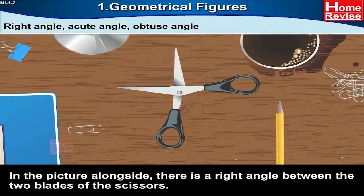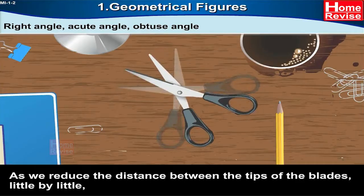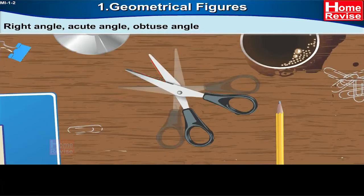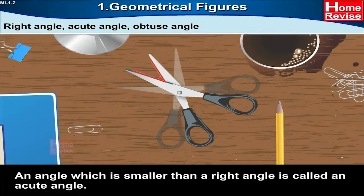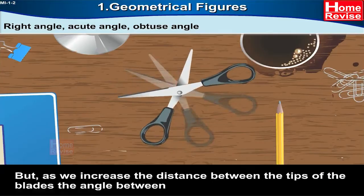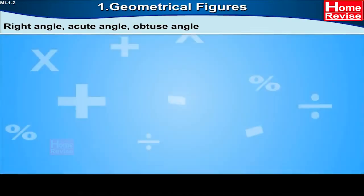As we reduce the distance between the tips of the blades little by little, the angle between the blades grows smaller than a right angle. An angle which is smaller than a right angle is called an acute angle. But as we increase the distance between the tips of the blades, the angle between the blades grows bigger than a right angle. An angle that is bigger than a right angle is called an obtuse angle.